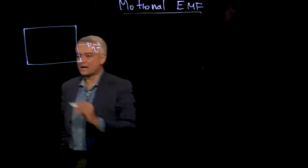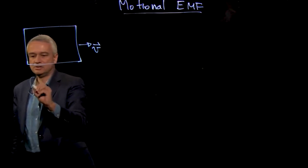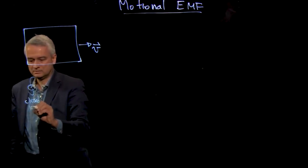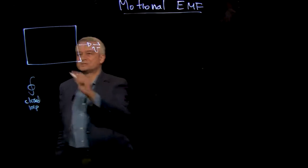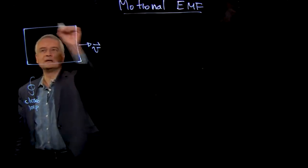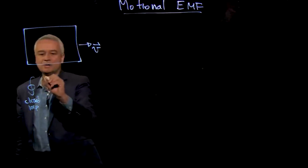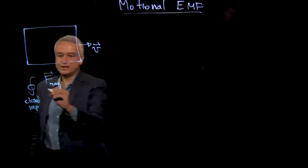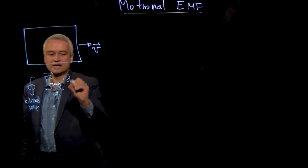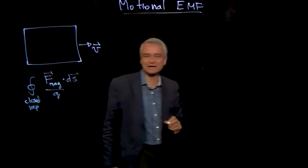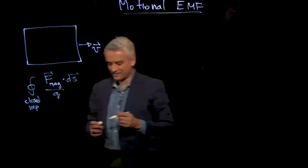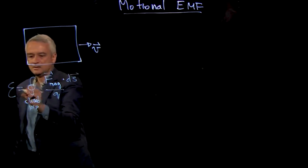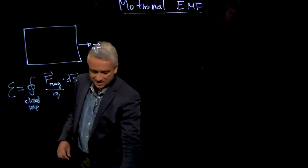I'm going to work out the integral around this closed loop of the force on a charge Q taken around this loop. The force I'll consider is the magnetic force on charge Q as I walk that charge around the loop. Since there's a magnetic force, there must be a magnetic field, so I need to specify what the magnetic field is in this problem.